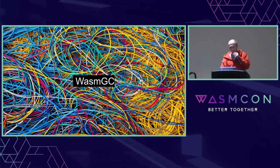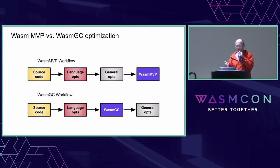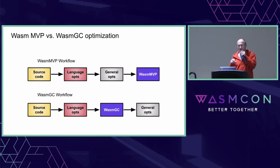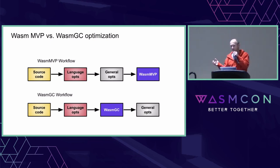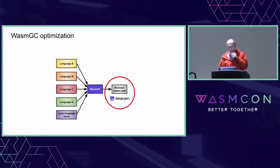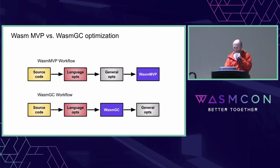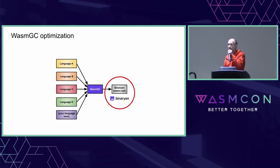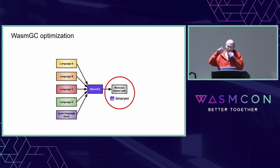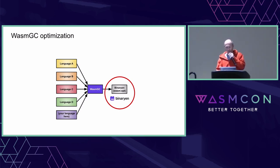Let's talk about Wasm GC because it's a big one. In the MVP case, you have source code, language-level optimizations, general-level optimizations, and then Wasm MVP output. With Wasm GC, the workflow is modified: source code, language-level optimizations, then Wasm GC output, and then you apply general optimizations at the end. This is useful because it lets you run all general optimizations at the last step — in practice using wasm-opt. Any supported language can compile to Wasm GC and then have those general optimizations applied.